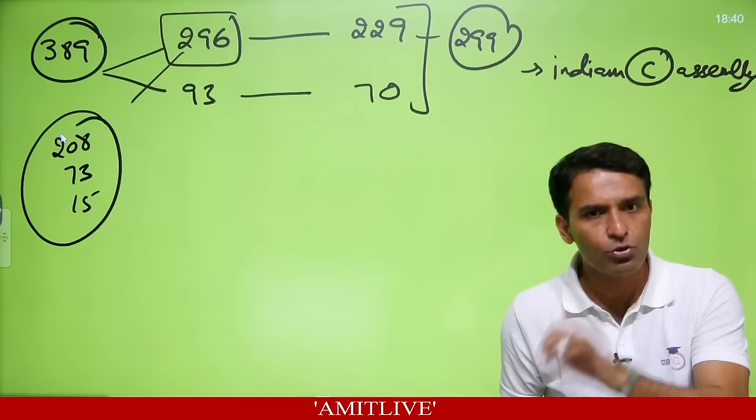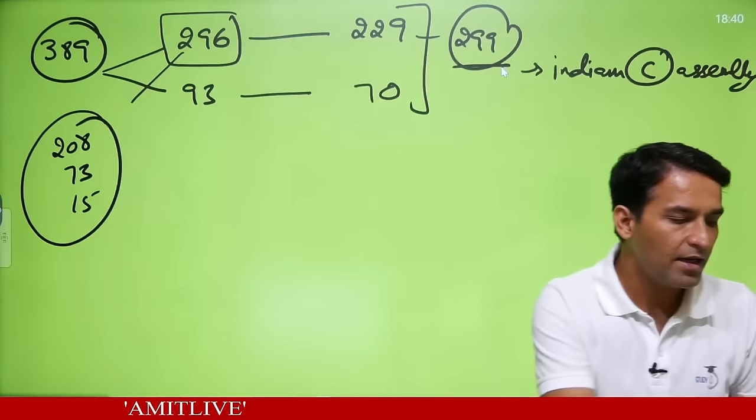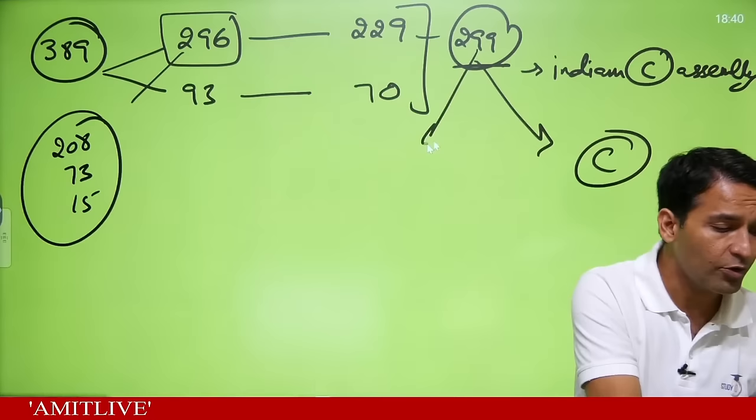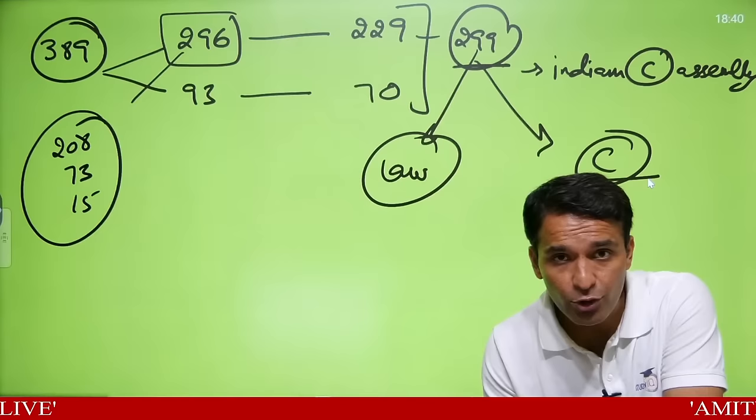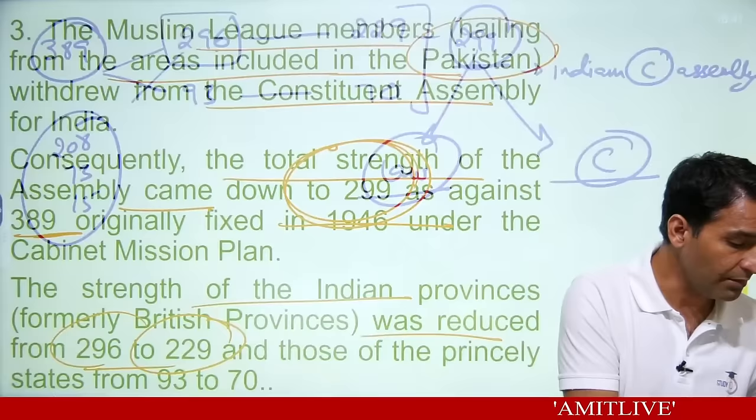Total 299 members were given work after India Independence Act was passed — to make the constitution and also to make laws until the constitution was ready. When the constitution was being made, Dr. Rajendra Prasad would chair it; when it was law-making, G.V. Mavalankar would be the chairperson.